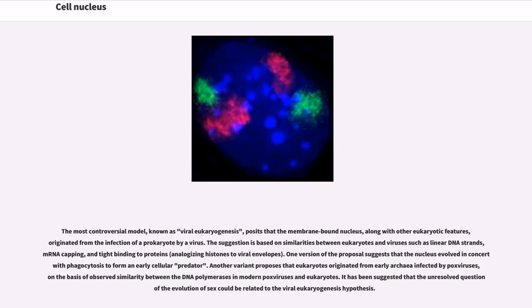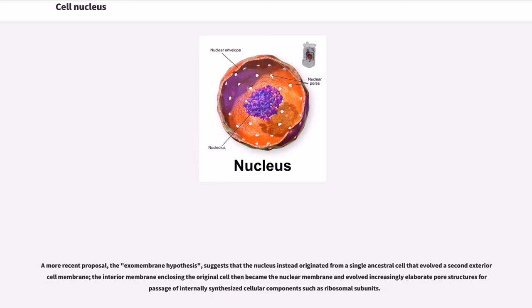A more recent proposal, the exomembrane hypothesis, suggests that the nucleus instead originated from a single ancestral cell that evolved a second exterior cell membrane. The interior membrane enclosing the original cell then became the nuclear membrane and evolved increasingly elaborate pore structures for passage of internally synthesized cellular components such as ribosomal subunits.